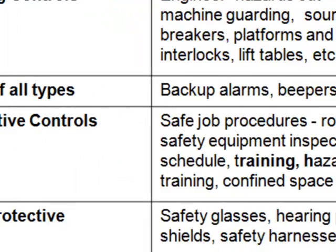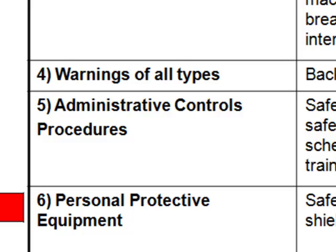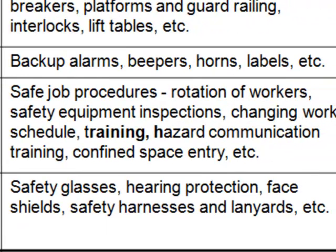We move on to number five, where we have administrative control procedures. These are the SOPs — standard operating procedures — or safe job procedures. We might rotate workers, implement equipment inspections, change work schedules, do training, hazard communications training, confined space entry training. All those things that we think of as being part of the human element. These do not change the scope and nature of the hazard, but they are training people and effectively putting into place administrative controls to let people know that hazards are present.